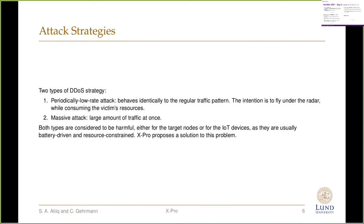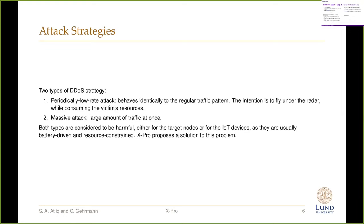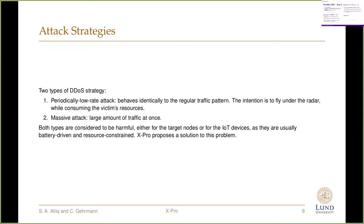Now, I'm going to explain a bit about the attack strategies from the attacker. Basically, there are two types. The first is the periodically low rate attack, in which they try to behave identically to regular traffic patterns, flying under the radar while consuming the victim's resources as much as possible. The second is a massive attack, where the attacker sends a large amount of traffic at once. We believe both types are harmful — either for the victim or for the IoT device itself, since they are usually battery driven and resource constrained.